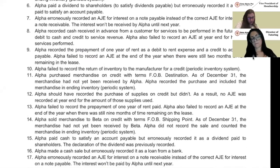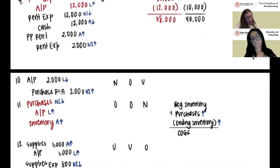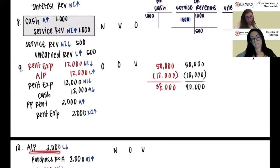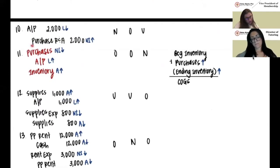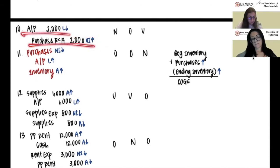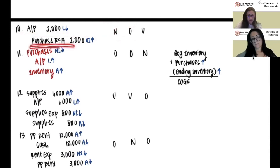Number ten: Alpha failed to record the return of inventory to the manufacturer for a credit using the periodic inventory system. They should have debited accounts payable and credited purchase returns and allowances. The debit to accounts payable would have decreased liabilities. Purchase returns and allowances is a contra account to purchases, so it increases net income. Neither account affects assets, so no effect on assets. Liabilities should have been decreased but weren't, so liabilities are overstated. Net income should have been increased but wasn't, so net income is understated. That covers questions 1 through 10.